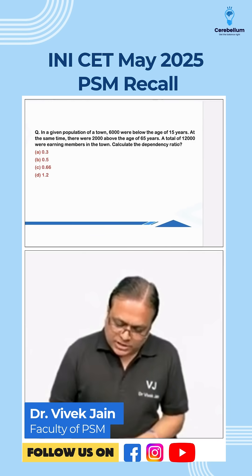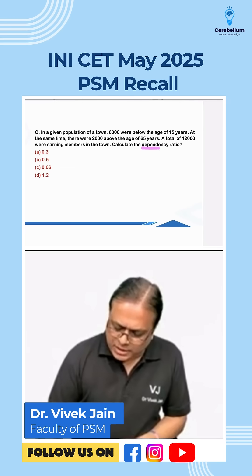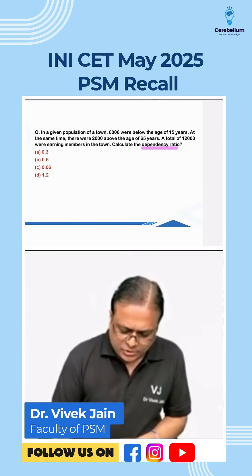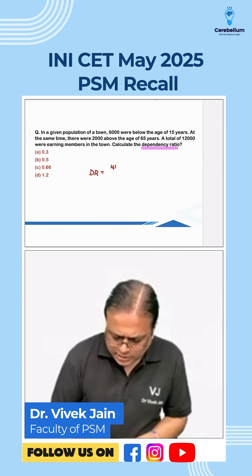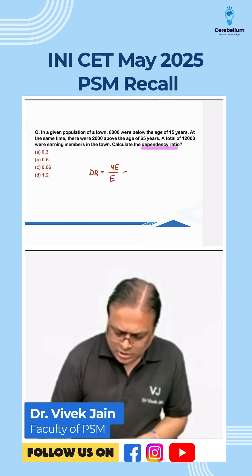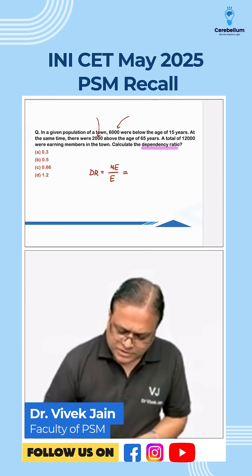This question was on dependency ratio — again a repeat question, and quite easy. The dependency ratio is non-earning population divided by earning population. Non-earning includes those below 15 and above 65.